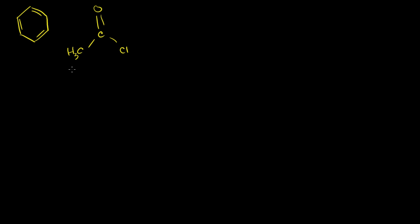So let's say we've got ourselves some benzene. In the first step of this reaction, the benzene is just going to sit and watch. We've also got some acetyl chloride. It looks almost like an aldehyde or a ketone, but instead of having a carbon chain or a hydrogen, we're going to have a chlorine atom right there. So this is acetyl chloride, sometimes called acyl chloride.